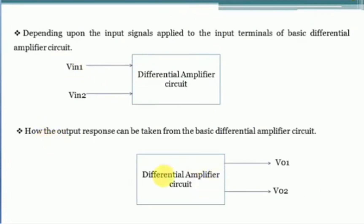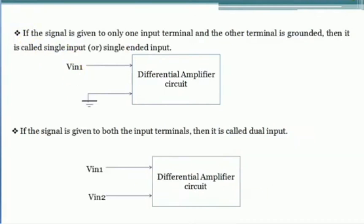The second classification is based on how we are obtaining the output response from the differential amplifier circuit. For the first classification: if the signal is given to only one input terminal of the differential amplifier circuit and the other terminal is grounded, then it is called a single input or single-ended differential amplifier circuit. If input signals are given to both input terminals, then it is called a dual input differential amplifier circuit.